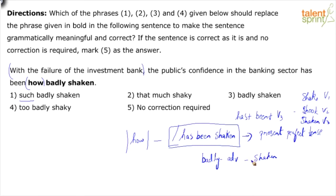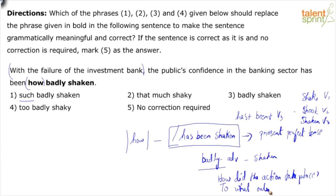Shaken is my action verb. To what extent has it been shaken? Badly shaken. My adverb modifies or gives additional information about to what extent the action took place or how the action took place. In this context, it's 'shaken' which is the action. The only correction needed is option 3 — 'badly shaken' — without the 'how.' That's why it's not option 1 because 'such' is an unnecessary word in the context.